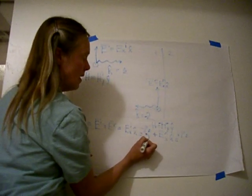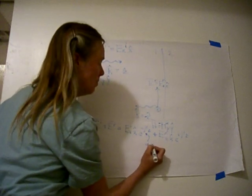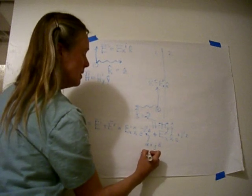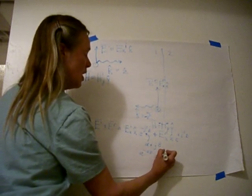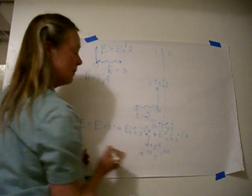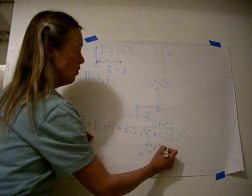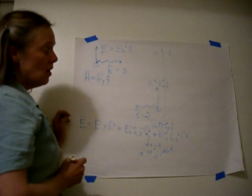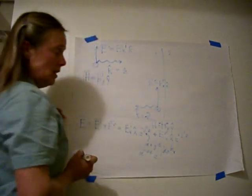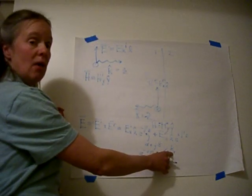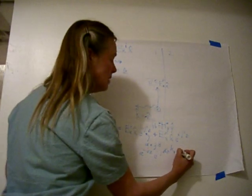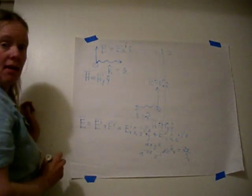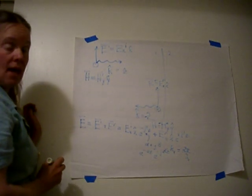Now we know what gamma is. That's the propagation constant. Gamma is alpha plus j beta. So this term becomes e to the minus alpha z, e to the minus j beta z. For plane waves, another term that we use for beta is k. Notice that this k does not have a vector over it. It's a constant that means beta. k is also going to depend on which region we're in. So this is k1. k is equal to 2 pi divided by lambda, just like beta was. So k and beta are different terms, but generally we use k for plane waves.